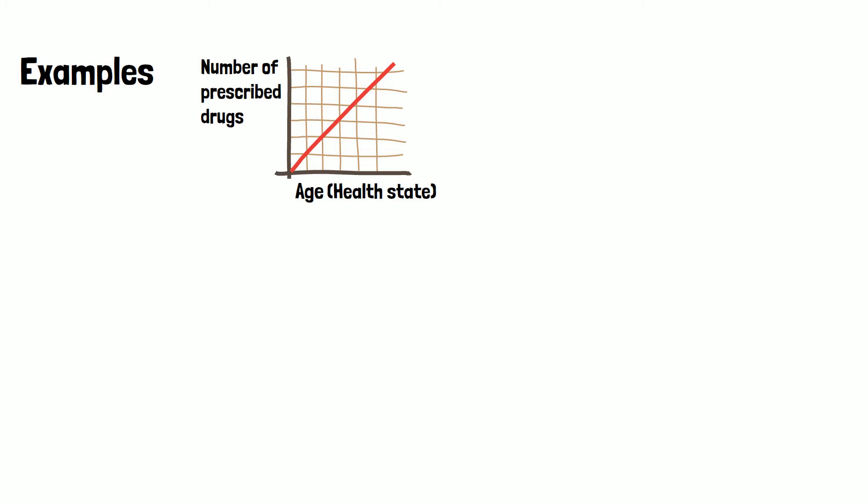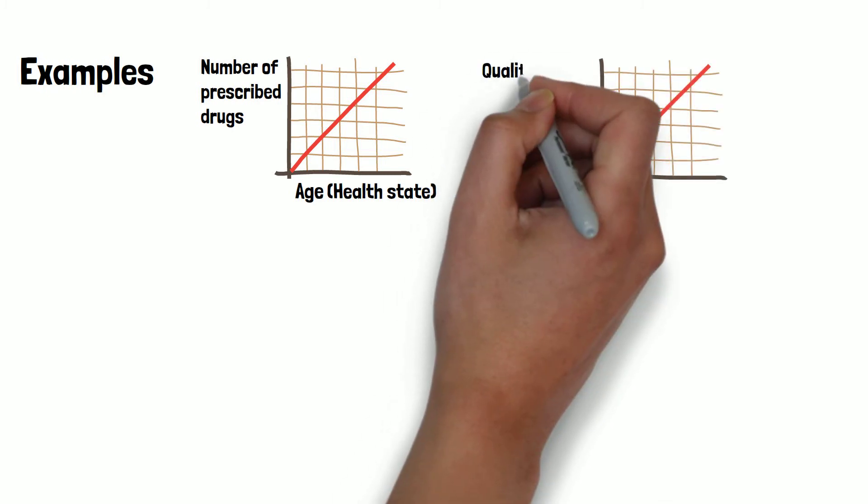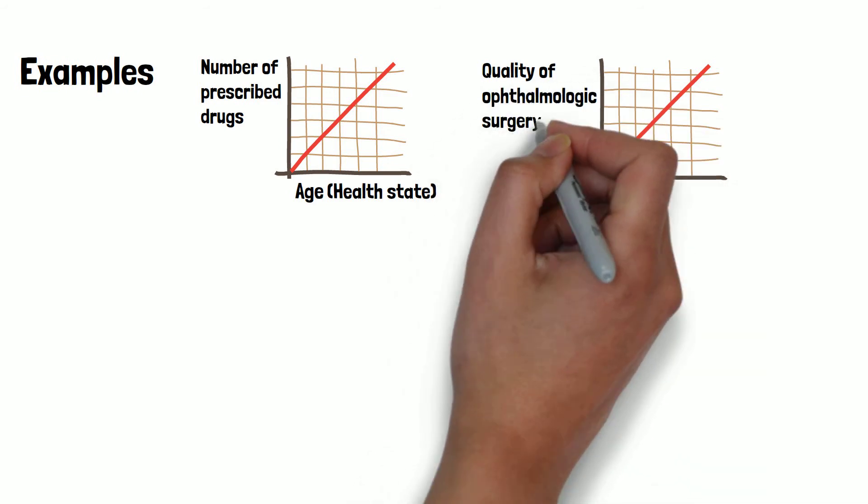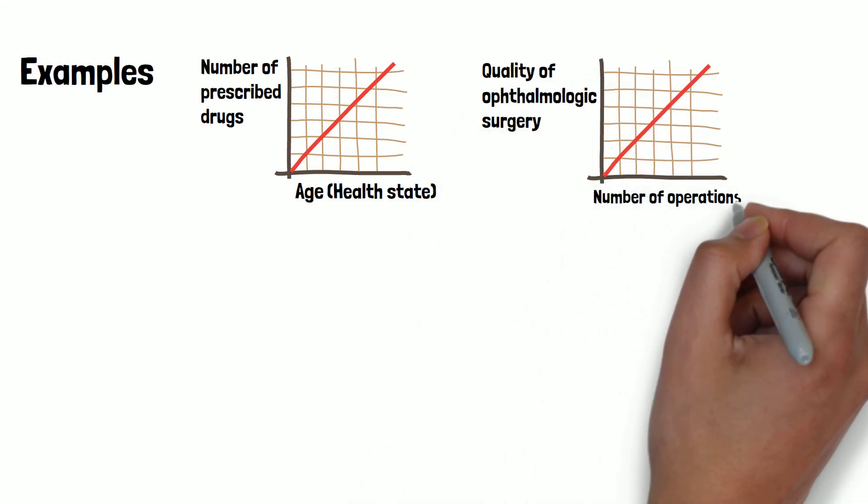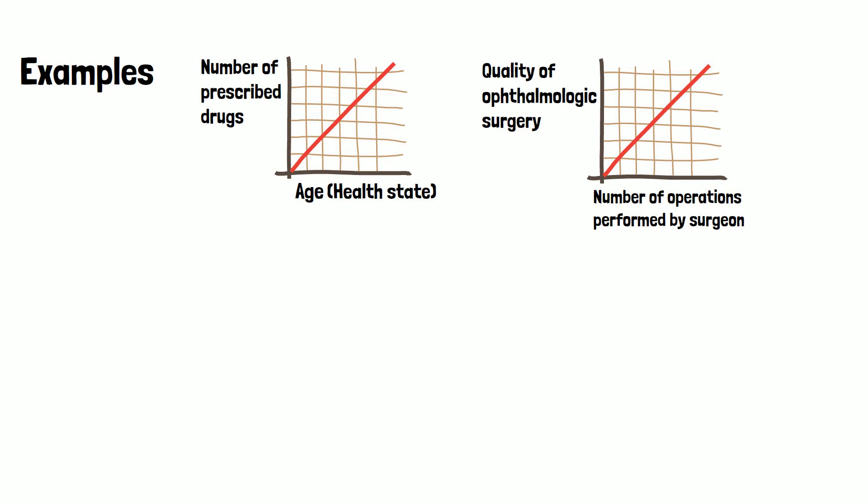Another example would be the dependency of the quality of an ophthalmologic surgery and the number of operations the surgeon has performed. The more operations the surgeon is doing, the more experienced he becomes, and the better will be the quality of the operation.